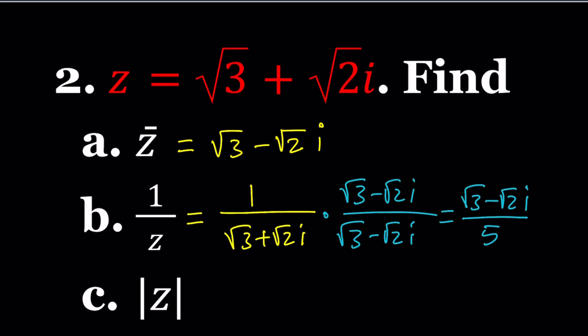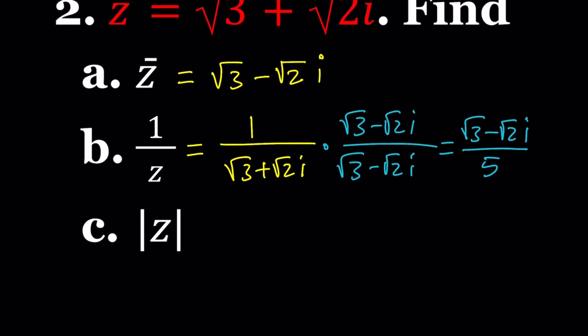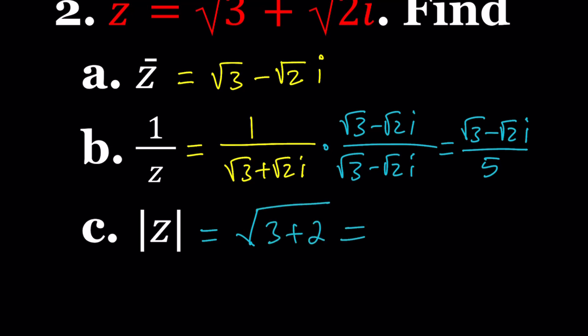Now, how do you find the absolute value of z? If you multiply z and z conjugate, you get the absolute value of z squared. In other words, the absolute value of z is the square root of a squared plus b squared. That will be square root of 5. Notice that the denominator is just the square root of 5 squared.